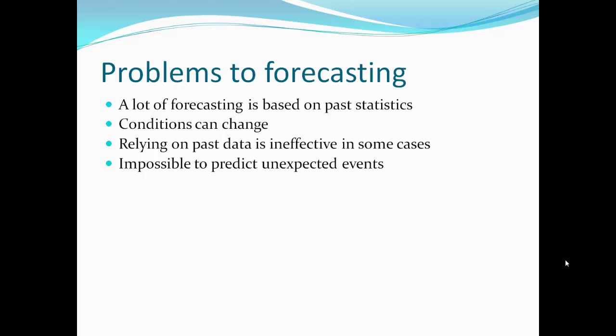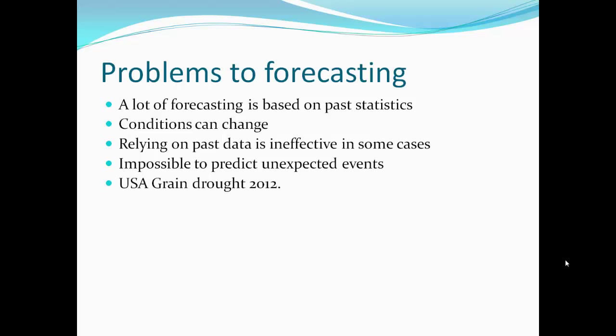The next problem is where it is impossible to predict unexpected events and assumptions made can be dramatically wrong. This means that when the business comes to forecast something, if they assume they are going to get a certain amount of sales even though they do not, this can make the forecast a lot more inaccurate.